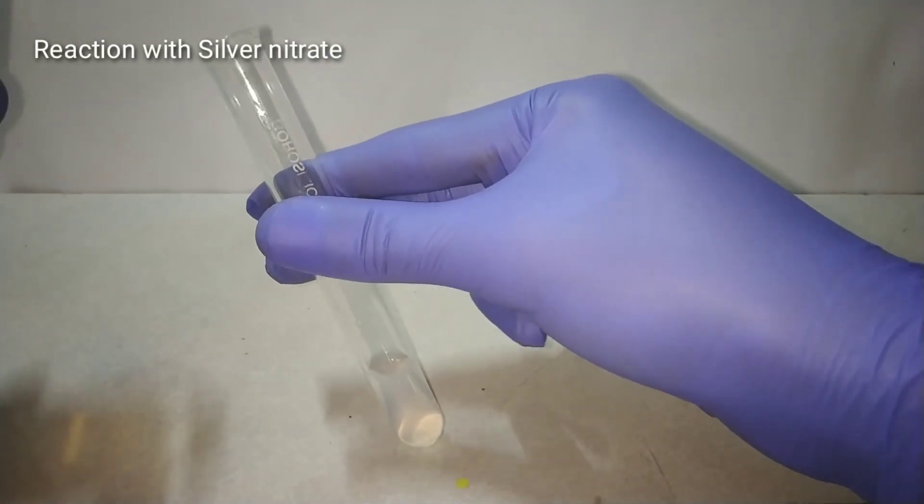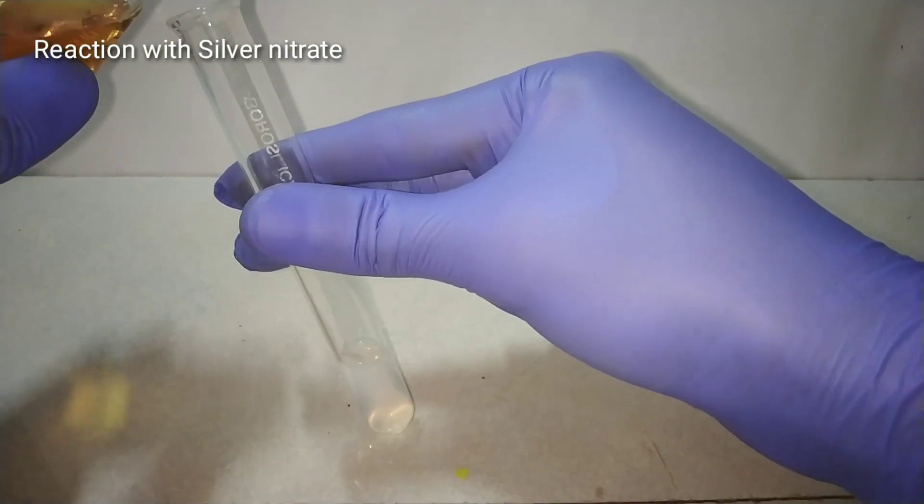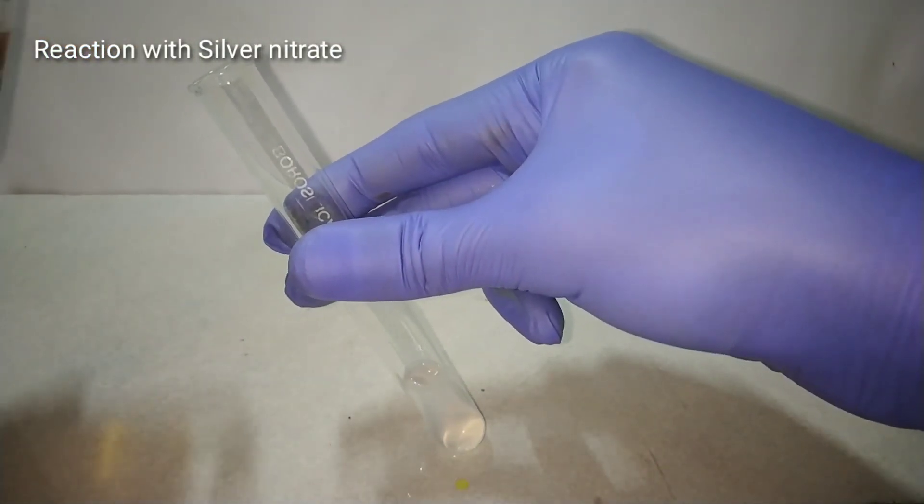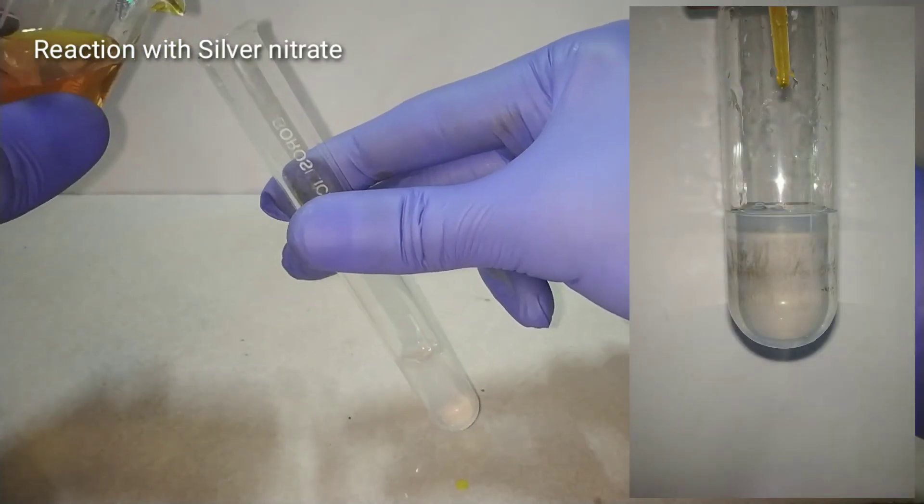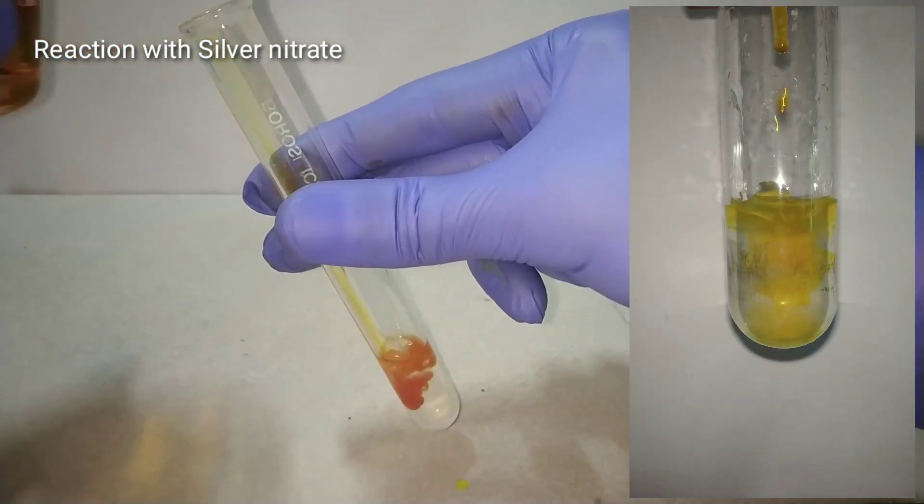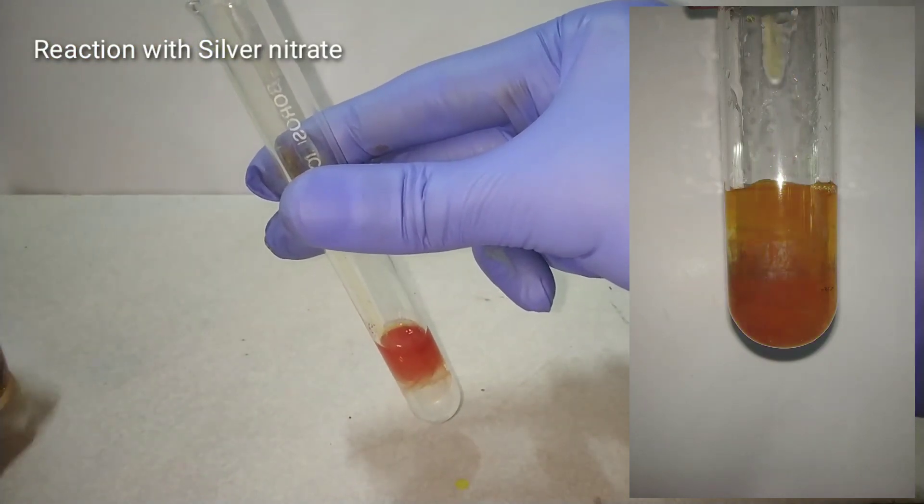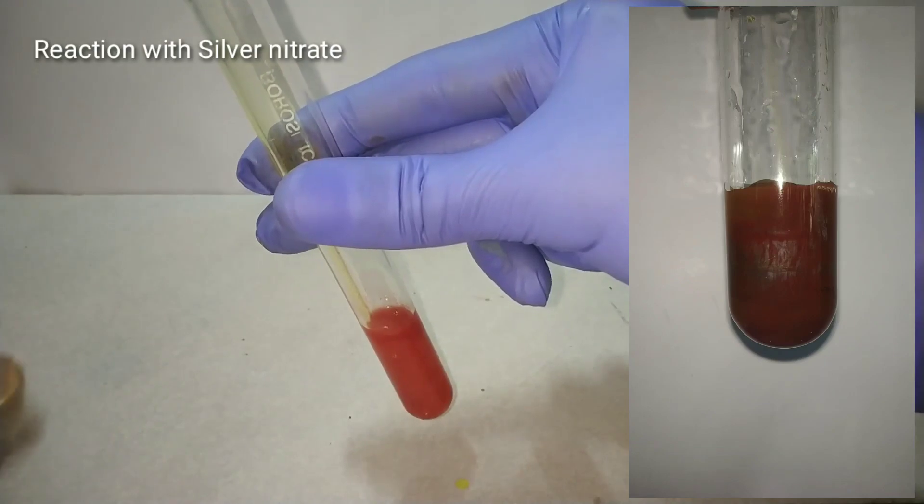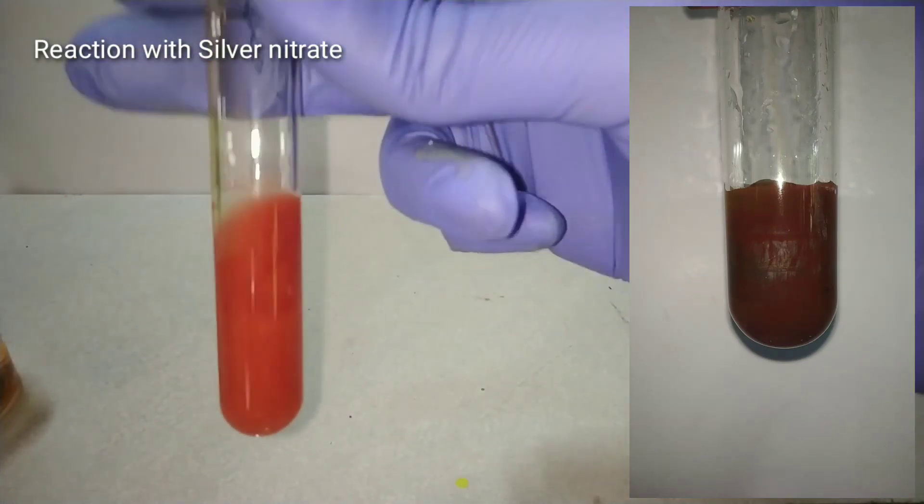Now let us see the reaction of ammonium dichromate with silver nitrate. I am adding some ammonium dichromate solution into silver nitrate. You can see that on adding the ammonium dichromate there is formation of a red colored precipitate of silver dichromate.